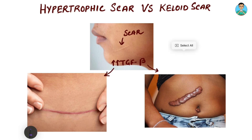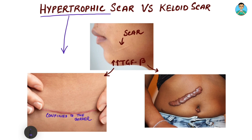In this image, you can see there is a scar which is confined to the borders of the original wound. This is something known as a hypertrophic scar.